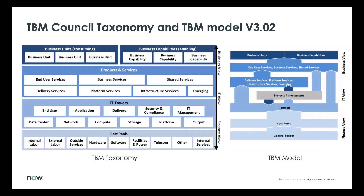The TBM Council taxonomy: what you see on the left and the right are the standard models they provide — industry and vendor agnostic. At the bottom you have cost pools, where you identify how you spend money and how you get billed by your vendors — internal and external labor. You move that money up the ladder to identify what IT towers it goes to, what products and services, and then it bifurcates into both a business unit and a capability perspective.